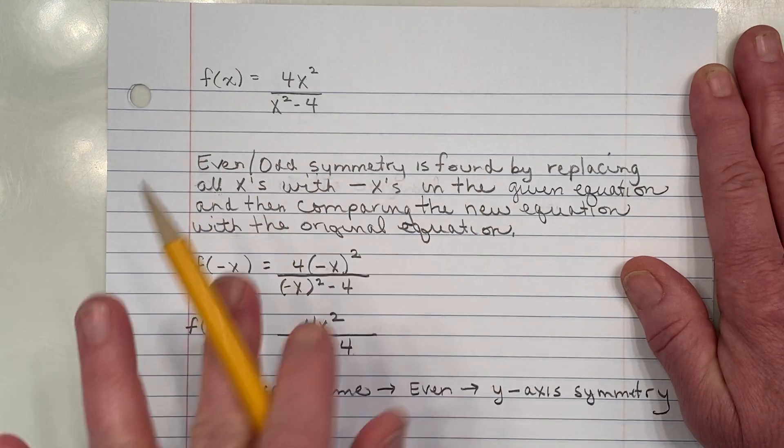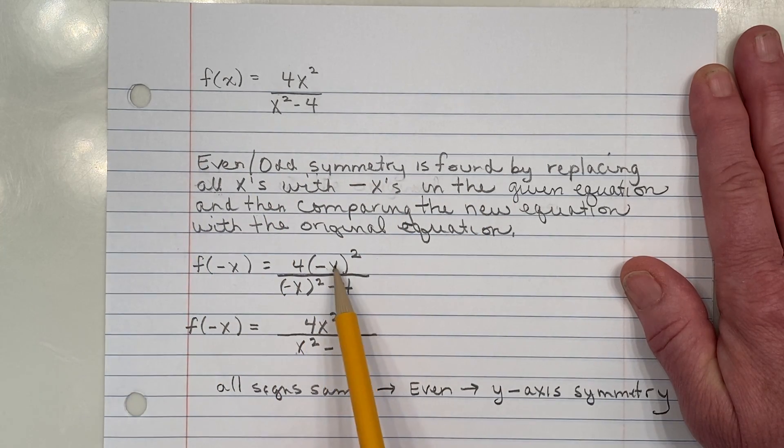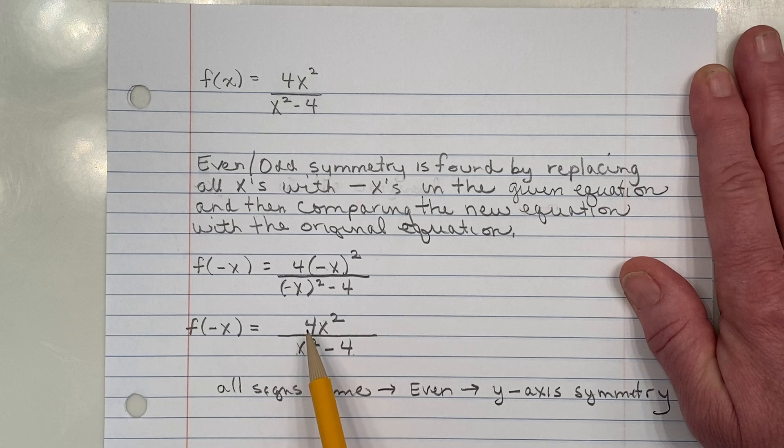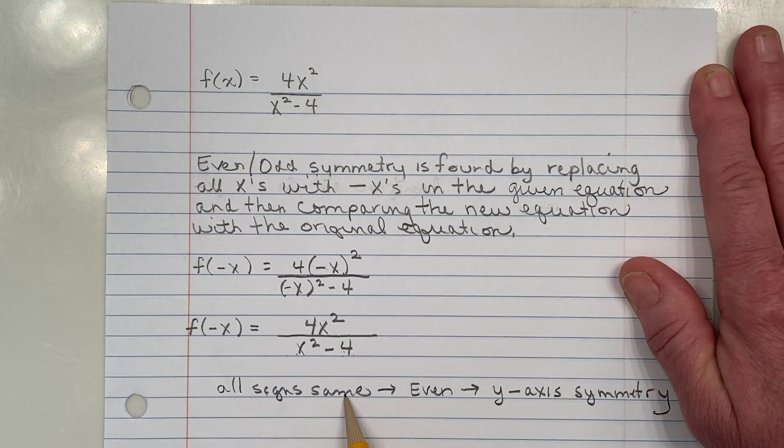Now let's just say, and that's done and over and everything, but let's just say that when we cleaned all this up, if all the signs were the opposite, like if this had been negative 4x squared, this had been negative x squared, and this had been a plus, if all the signs were different, then that means we have an odd function.